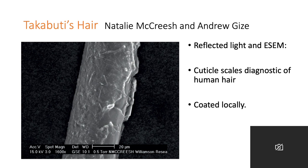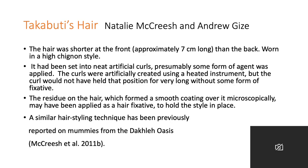This is her hair under the electron microscope. Two key features: first, you can see on the right-hand side something is sort of flaking off the hair — that's this coating we've seen before — and underneath that you can see the scales of the cuticle. Interpretations by Natalie are that the hair was shorter at the front than the back, and was worn in a high shun-yong style. The hair had been set into neat artificial curls, presumably using some kind of agent. Curls were artificially created using a heating instrument, but the curls had not held that position for very long without some form of fixative. The residue on the hair, which formed a smooth coating, may have been applied as a hair fixative to hold the style in place. Similar hair styling techniques have been previously reported by Natalie on mummies from the Dakhla Oasis.